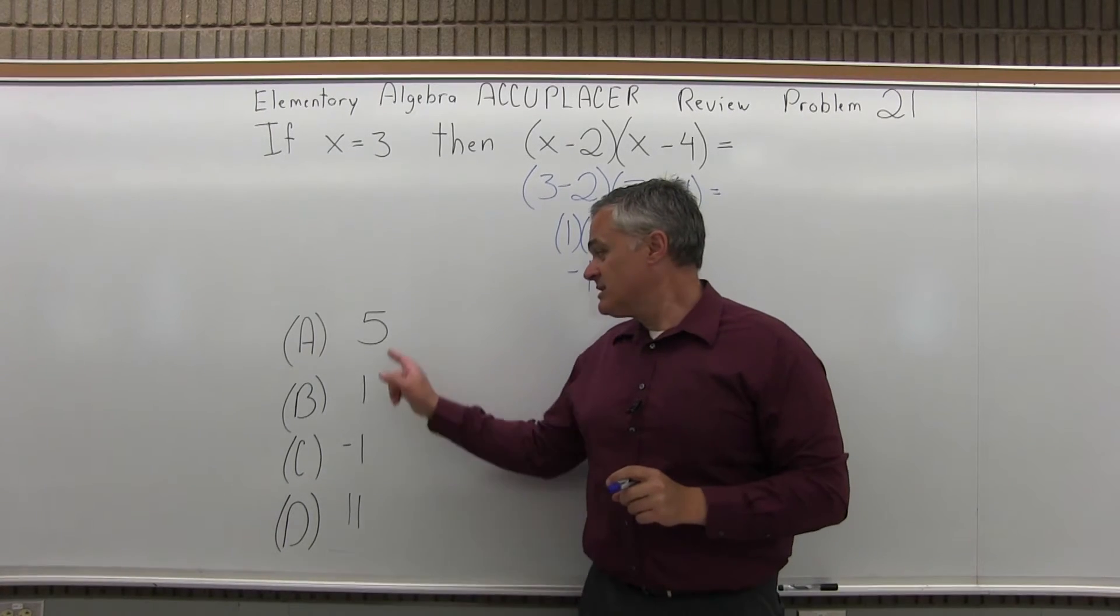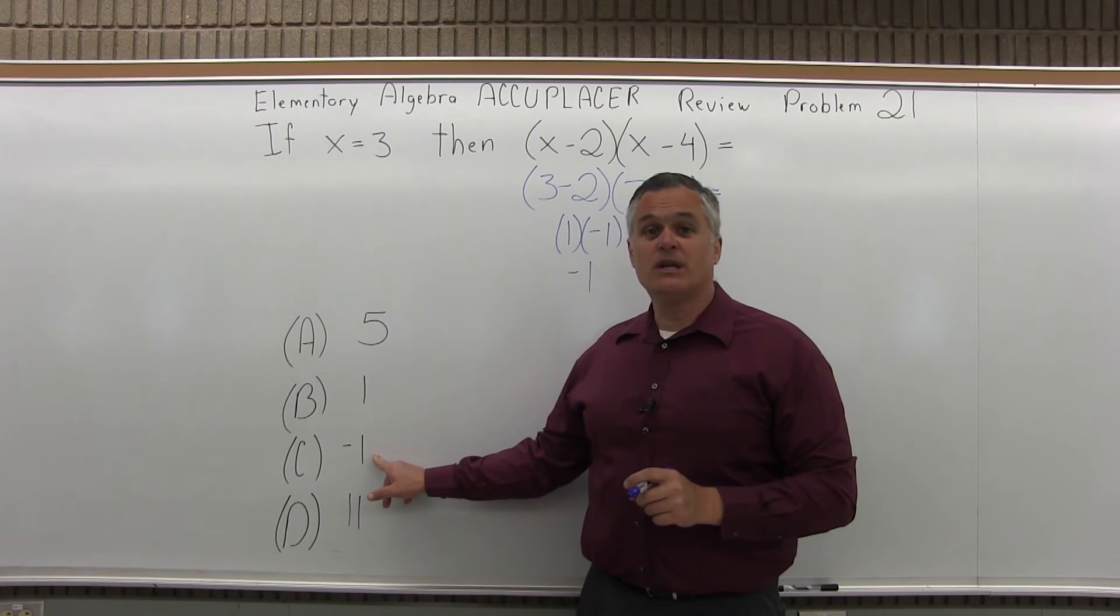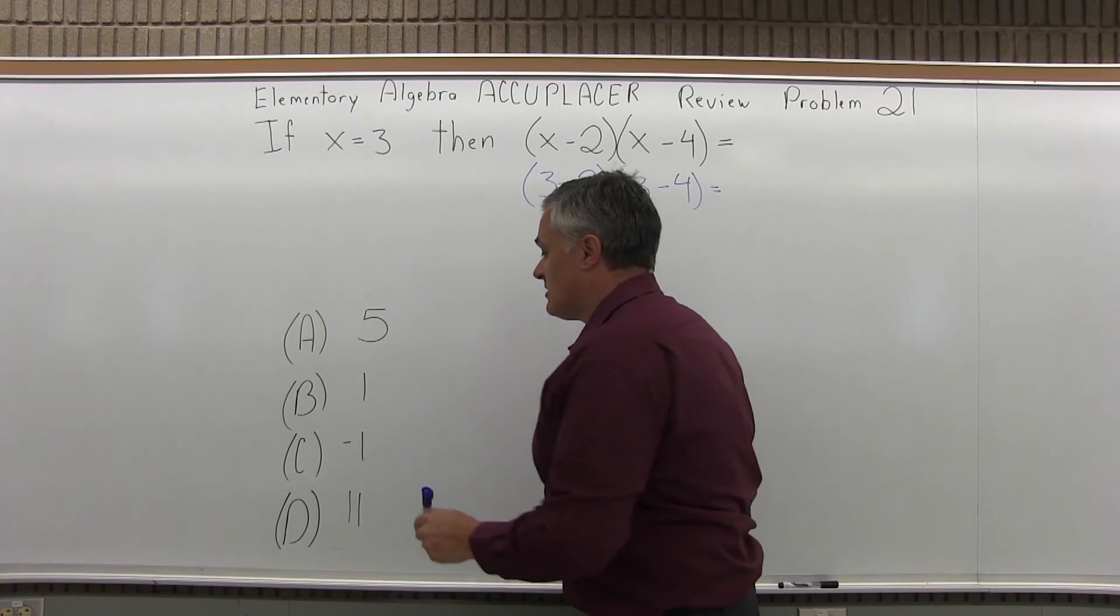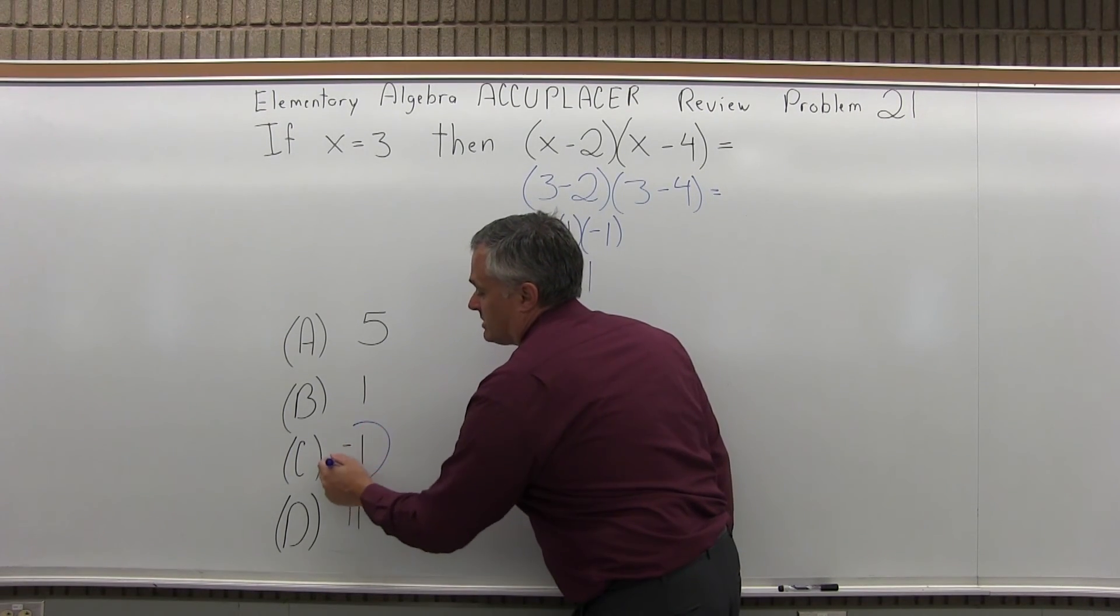Now if I look at my list of options, negative 1 is one of the possible options. It's option C. So the answer to 21 is option C.